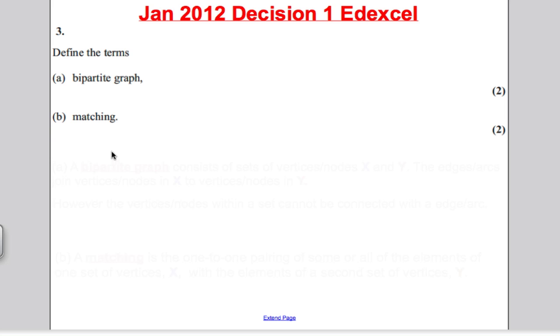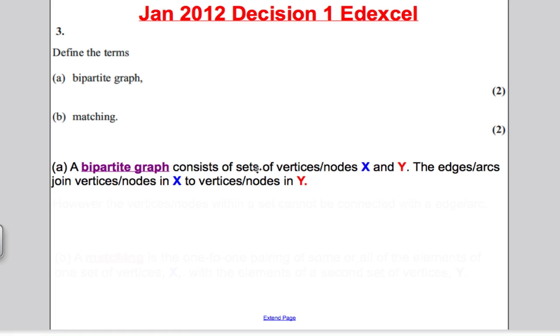Okay, so a Bipartite Graph, a couple of things you had to mention. The first thing, you had to say it consisted of sets of vertices or nodes X and Y, and the edges or arcs join the vertices or nodes in X to the vertices or nodes in Y. You don't have to write vertices and nodes each time, just make sure you're consistent with your definition. Same with edges or arcs, use one of the words.